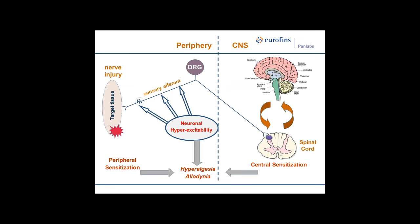In nerve injury, target tissue injury produces neuronal hyper-excitability via ectopic firing of action potentials in primary sensory afferents, feeding into cell bodies of dorsal root ganglia and terminating in lamina 2 of the dorsal horn of the spinal cord. This produces central sensitization and wind-up phenomena, with changes in membrane excitability, microglia, astrocytes, and gene transcription. This is sustained by low-threshold C-fiber input over long periods of time, producing decreased thresholds and sensitivity to normally non-noxious stimuli — hyperalgesia and allodynia.